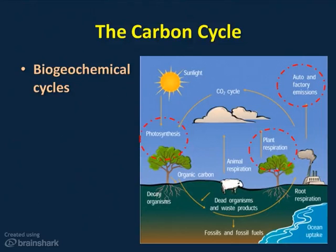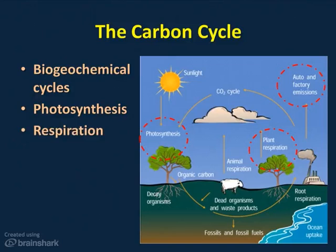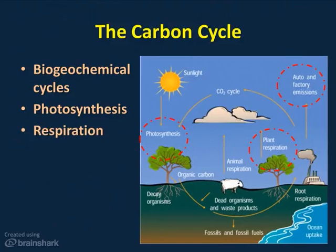Photosynthesis and respiration are reverse processes that either take in or give off carbon dioxide. Plants do photosynthesis, while animals and plants both do respiration, putting carbon dioxide into the air. Photosynthesis takes carbon dioxide out and uses it to make food, which is also a carbon compound. At nighttime, plants undergo respiration — taking in oxygen and giving off carbon dioxide just like we do. This is the biological part of the biogeochemical processes in the carbon cycle, shown in the circles labeled photosynthesis and plant respiration. Decaying organisms also put carbon dioxide back into the atmosphere, where detritivores and decomposers come in.